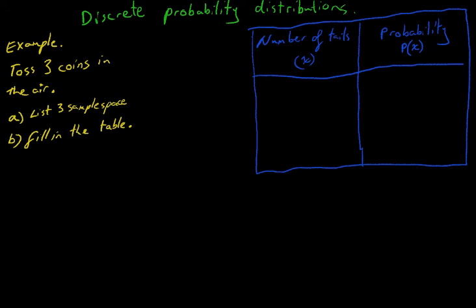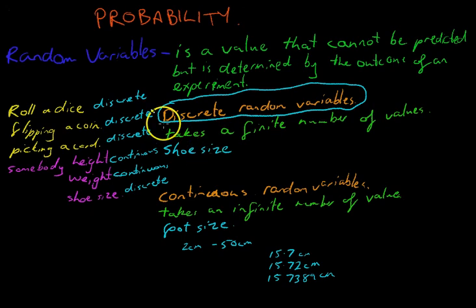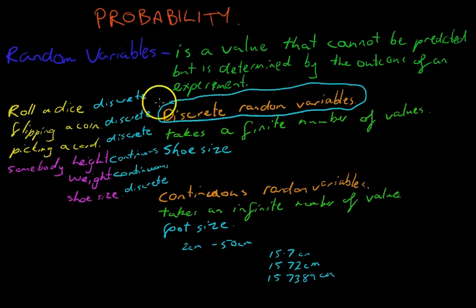In the last video, we looked at random variables — a value that cannot be predicted but is determined by the outcome of an experiment. Now we're really interested in discrete random variables. Dice, coins, picking a card, shoe sizes — anything that takes a finite number of values, we're talking about discrete random variables.